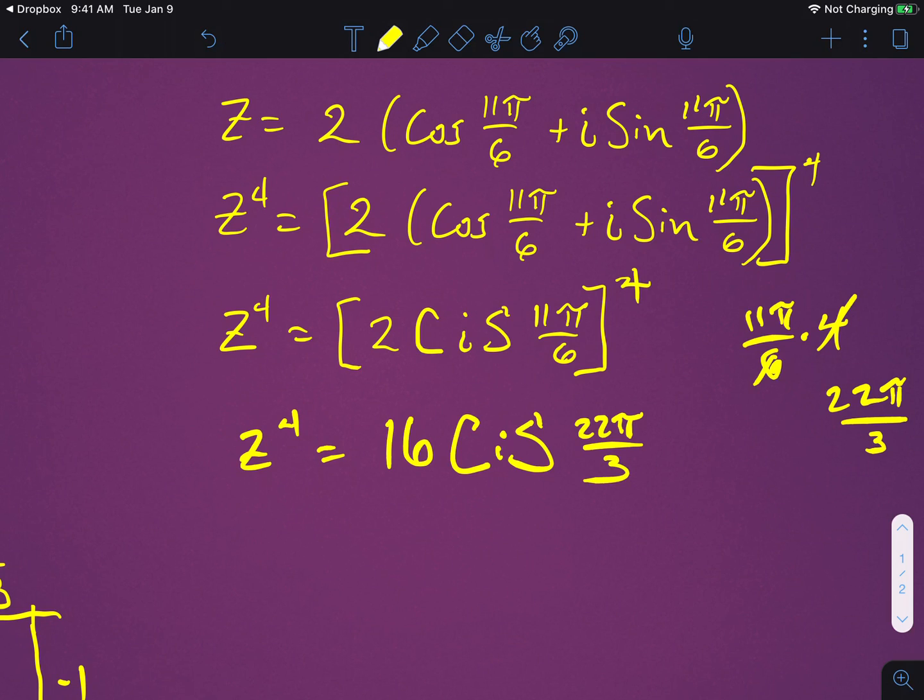And there that is. So now we've used DeMoivre's theorem and we have found the cis notation for that.